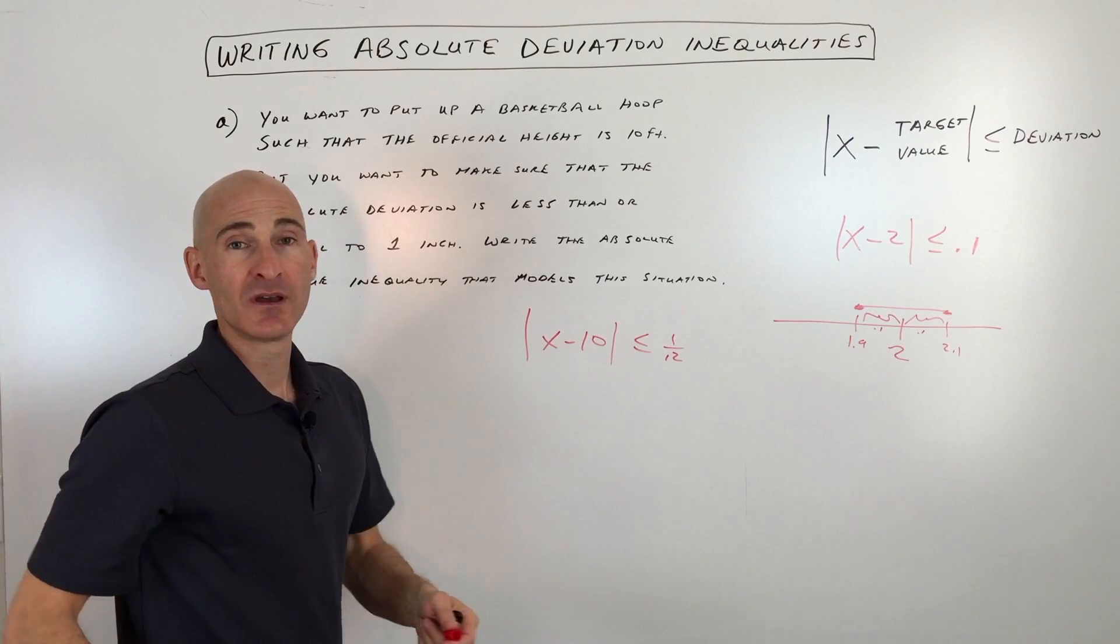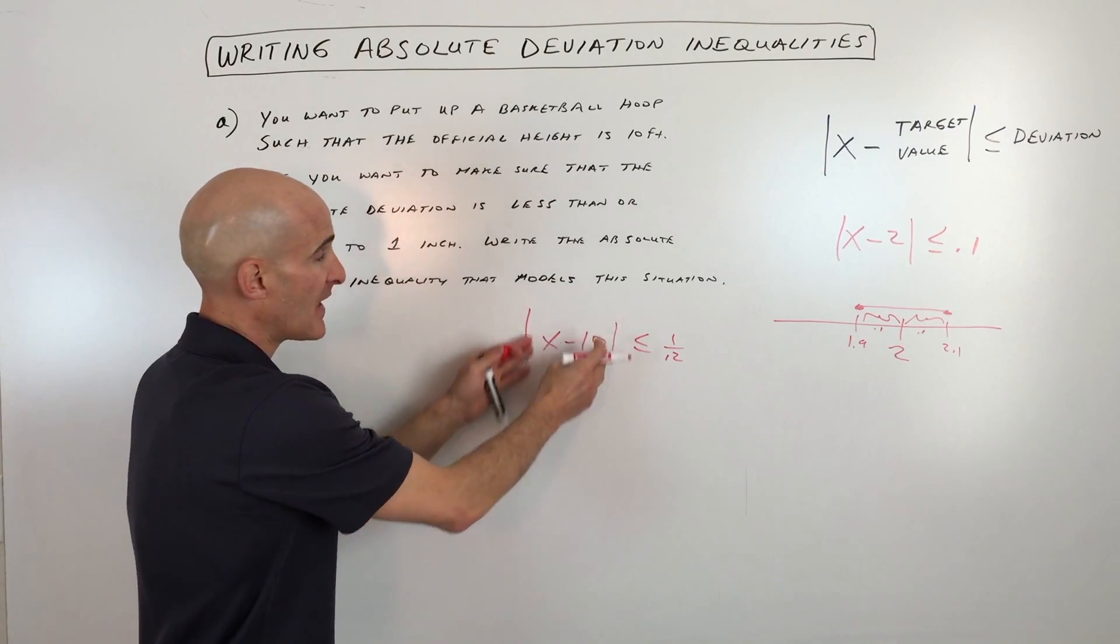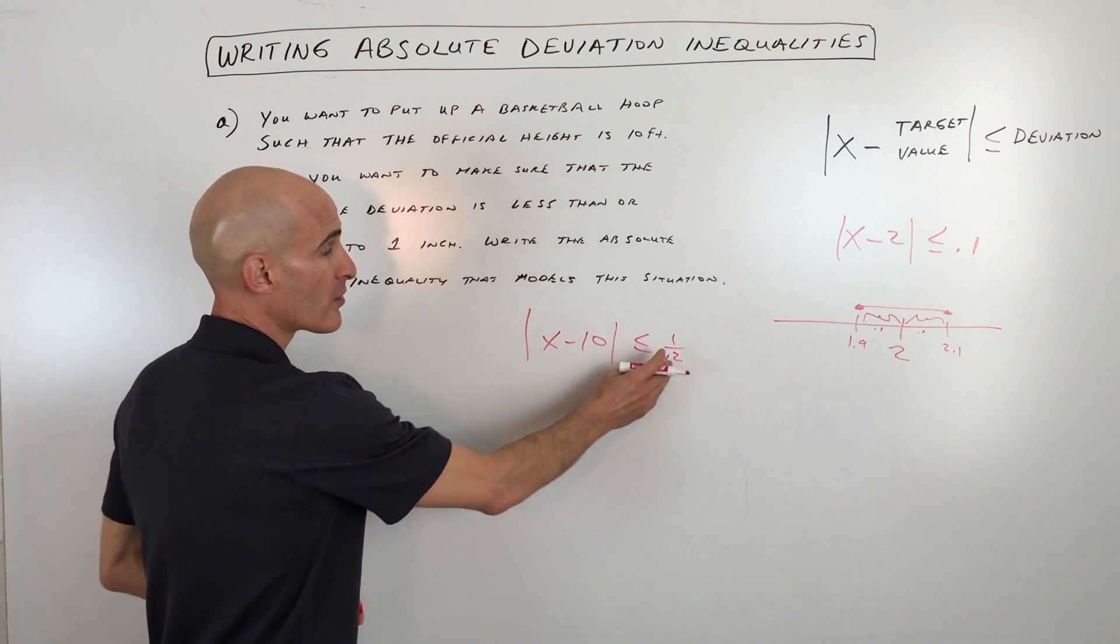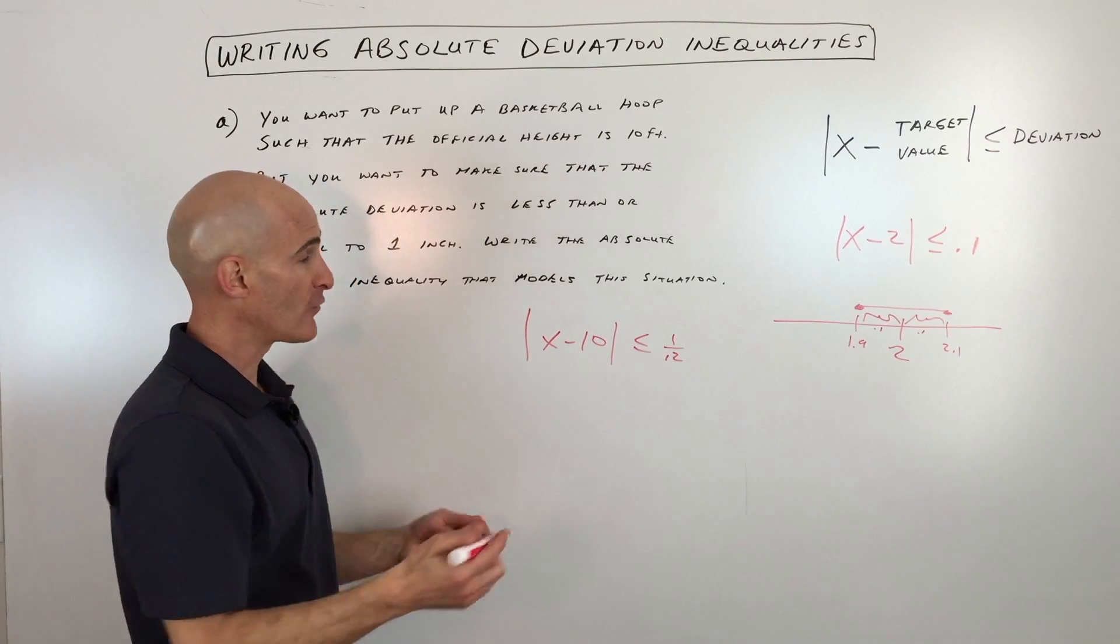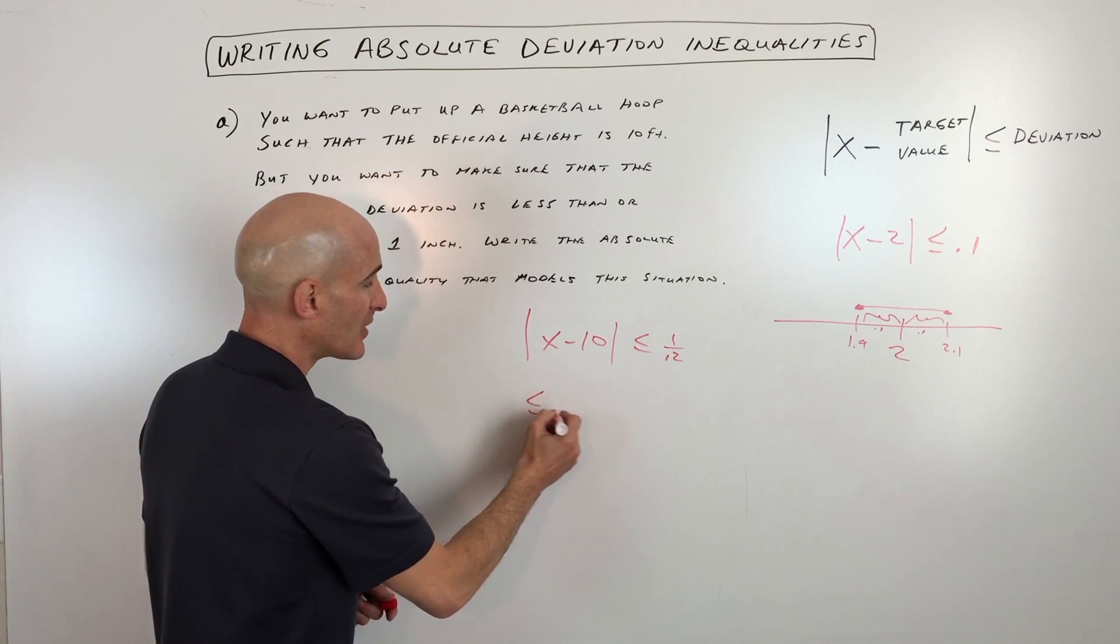This would be our absolute deviation inequality, and then you can see we're writing it as a difference, but that absolute difference can't be more than one twelfth of a unit. Now if we solve this, an easy way to solve these is just to set it up like a compound inequality.